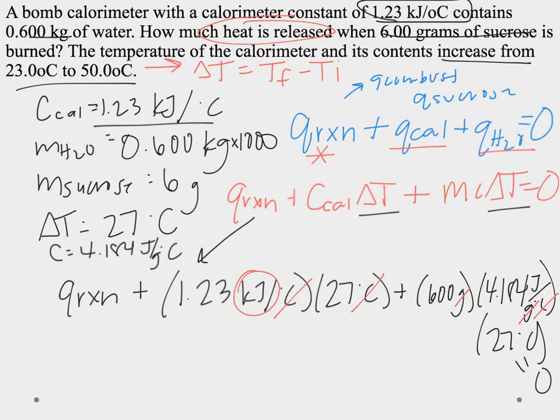And then plus 600 grams, so my grams cancel, my degree Celsius cancel. So now with Q of water, I'm left with joules. So we have Q reaction plus 33.21 kilojoules plus 67,780.8 joules equals zero.